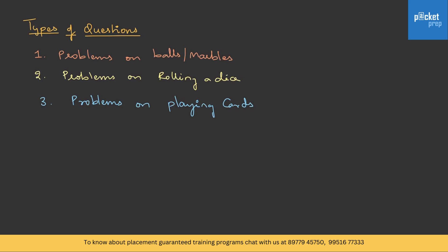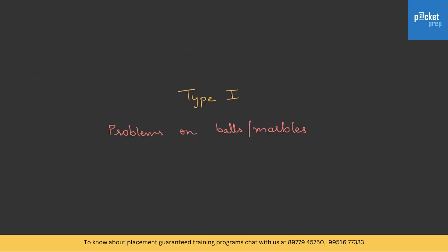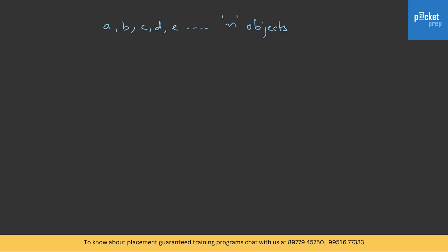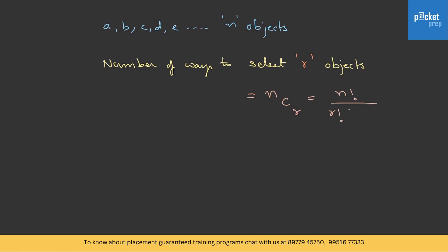Now let's solve questions on category one — problems on balls and marbles. For this, some basic concepts of permutation and combinations are important, specifically the combination concepts. If you're not thorough with those, please go back, watch permutation and combination, and come back. The number of ways to select R objects from N objects uses the formula NCR, which is N factorial by R factorial into N minus R factorial.